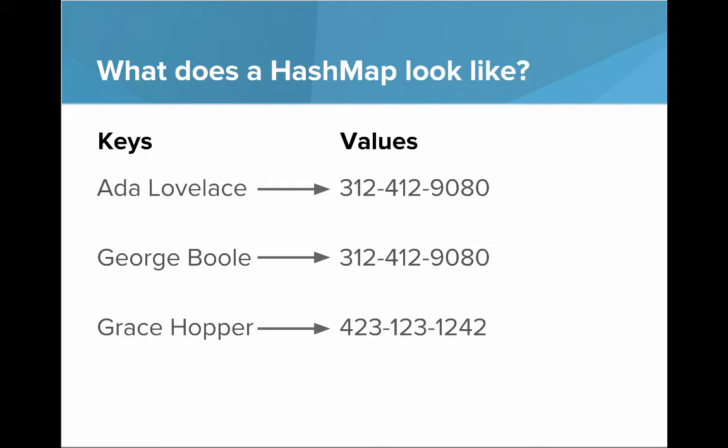So on the left, those are called the keys. The keys are the values that we can use to look something up. And values, that's what you get when you look something up in a map. So the key is the name, the value is the phone number.